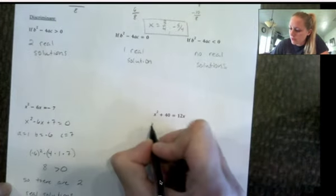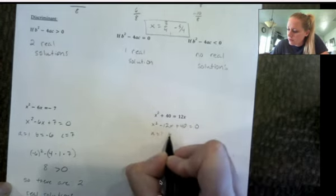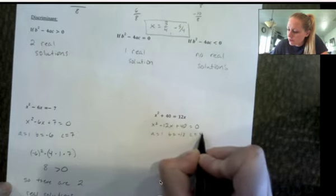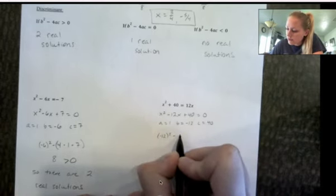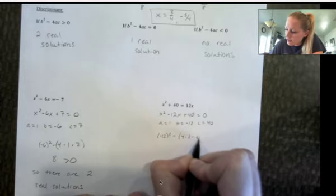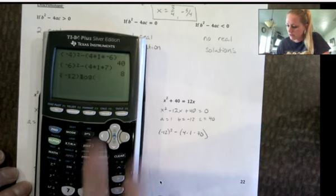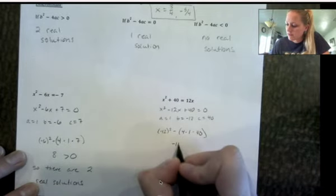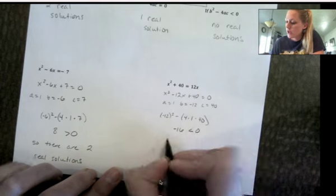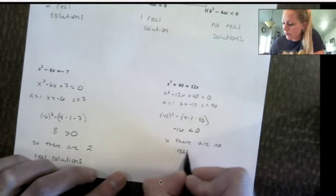For the next example, subtract the 12x over and set it equal to 0. So a is 1, b is negative 12, c is 40. Using the discriminant: negative 12 squared minus 4 times 1 times 40 gives negative 16. Since negative 16 is less than 0, there are no real solutions.